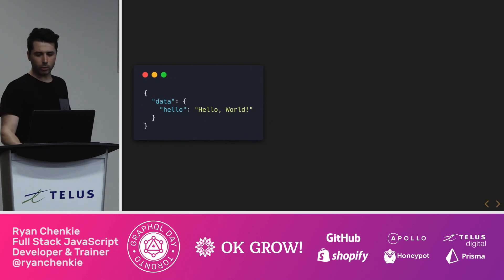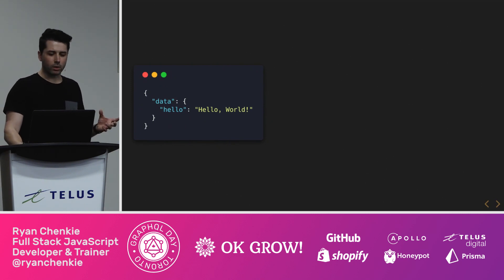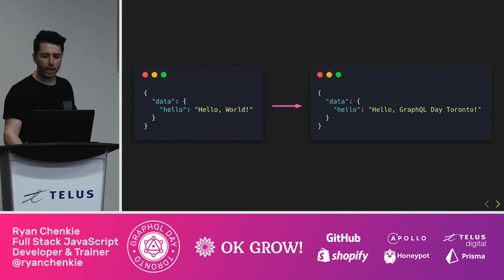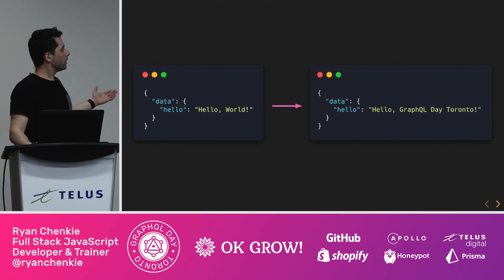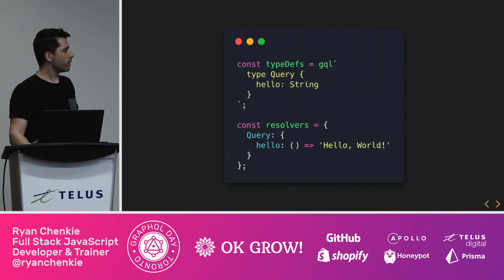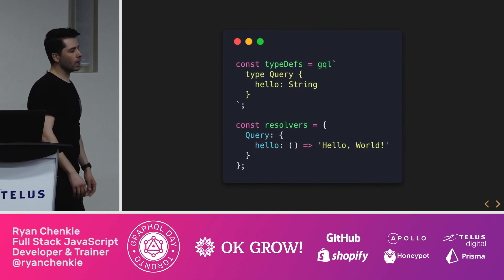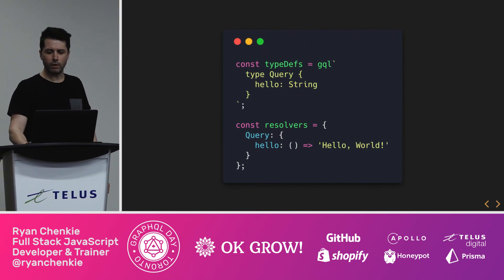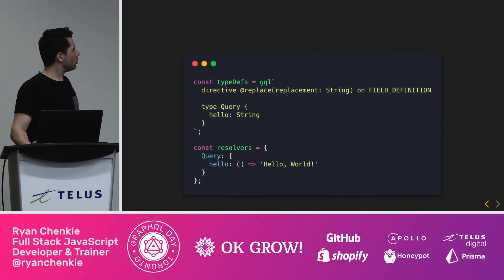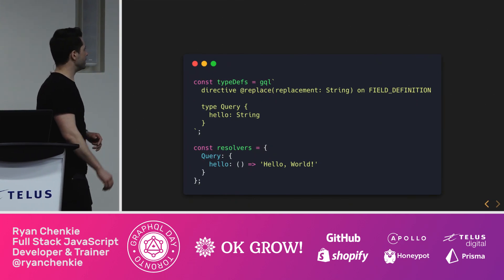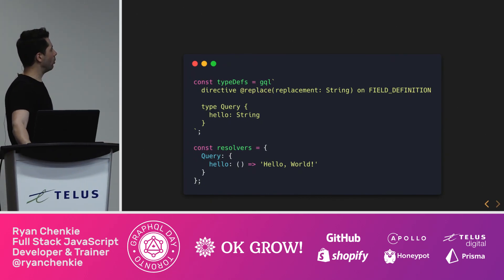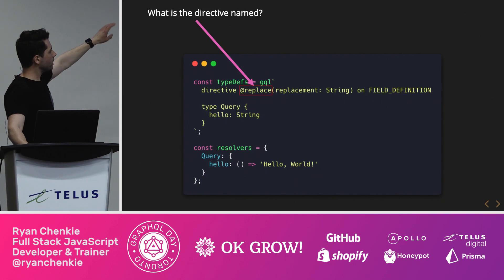Let's see an example. Let's keep it really simple to see how this works. Say we had this data here — this is like the initial response we would get from our GraphQL server. But what we wanted to get was something like 'Hello, GraphQL Day Toronto.' Here's a pretty simple server: we've got our query type, it's got one field called 'hello' that sends back a string, and then just a simple resolver sending back that string.